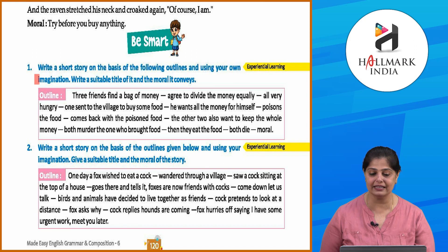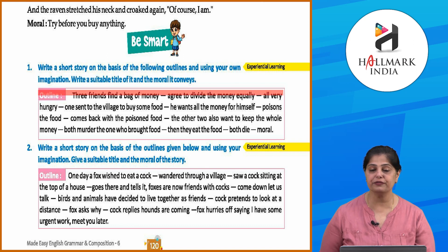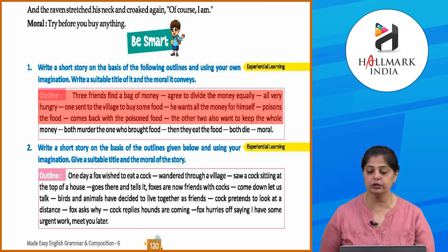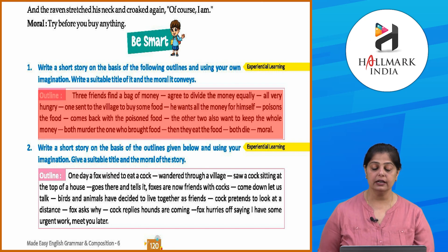Outline one: Three friends find a bag of money and agree to divide it equally. All are very hungry; one is sent to the village to buy some food. He wants all the money for himself, so he poisons the food and comes back. The other two also want to keep all the money, so they murder the one who brought the food. Then they eat the poisoned food — and both die.